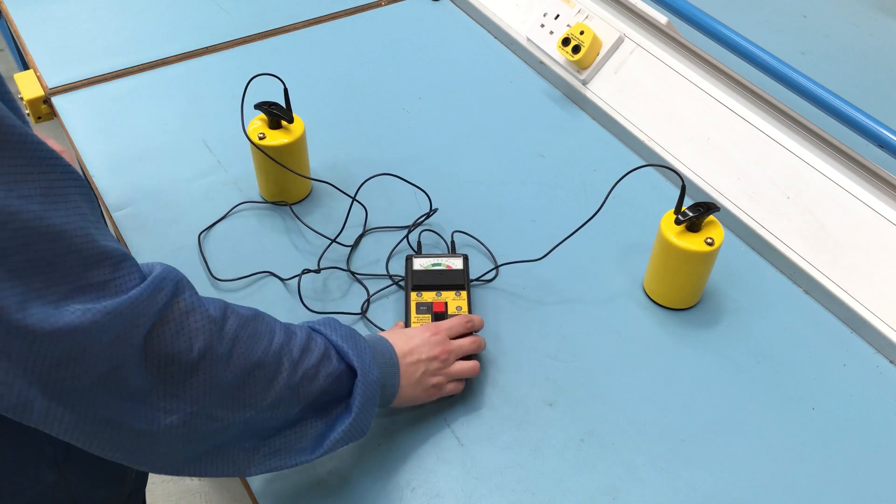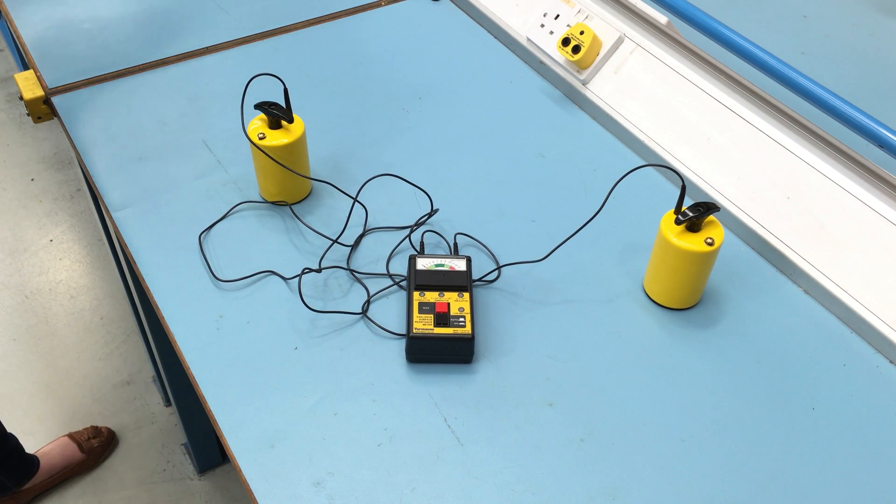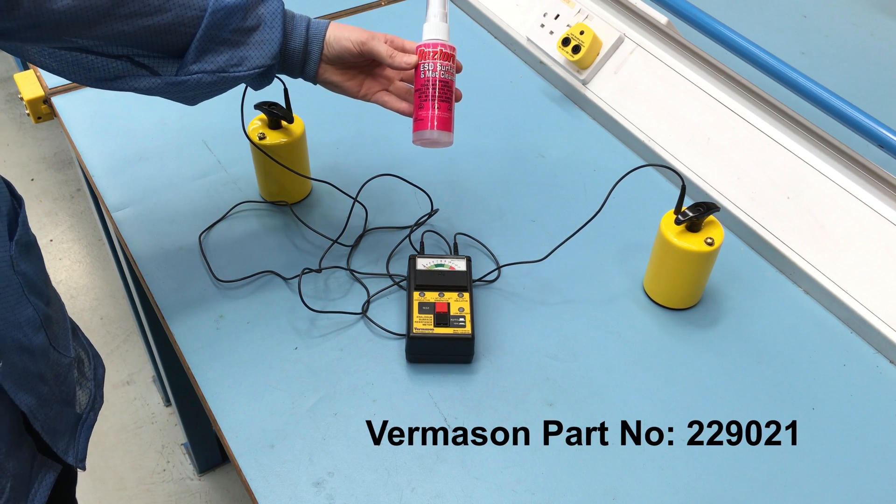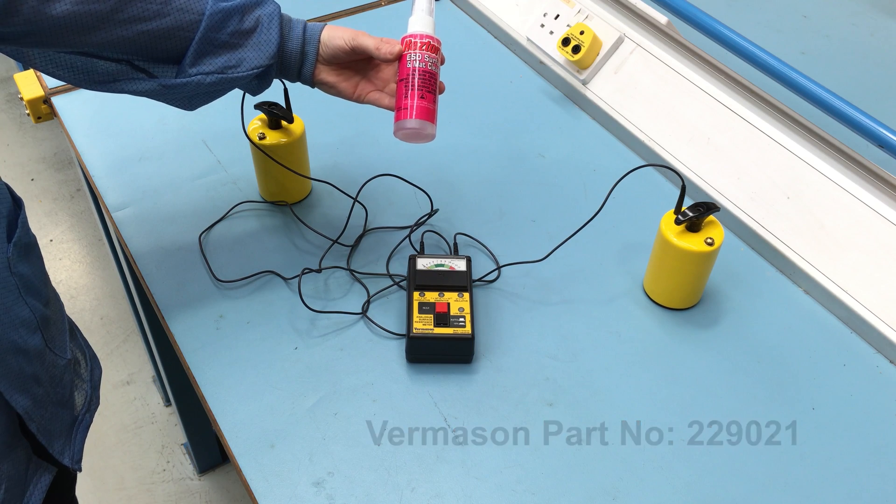If any measurement is outside acceptable limits, clean the surface with an ESD cleaner containing no insulative silicone, such as Restore, Antistatic Surface and Mat Cleaner.